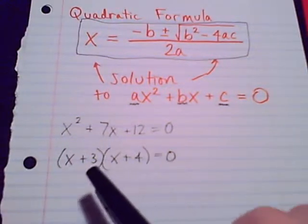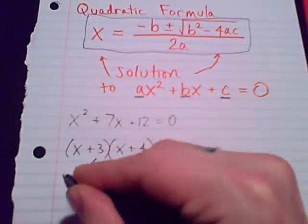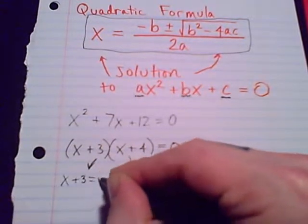We could factor this trinomial into x plus 3 times x plus 4. And then we can split these up into linear equations.